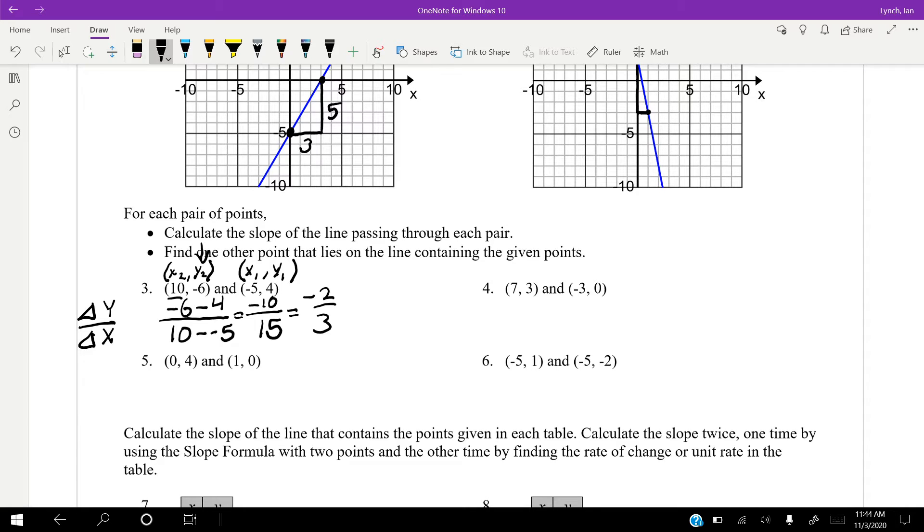All right, so again, x2, y2, x1, y1. We're going to take our y2 minus y1, so four minus zero, and then x2, which is zero, minus x1, which is one. So then we get four over negative one, and that will give us a slope of negative four. So as we move over one, we're going down four.